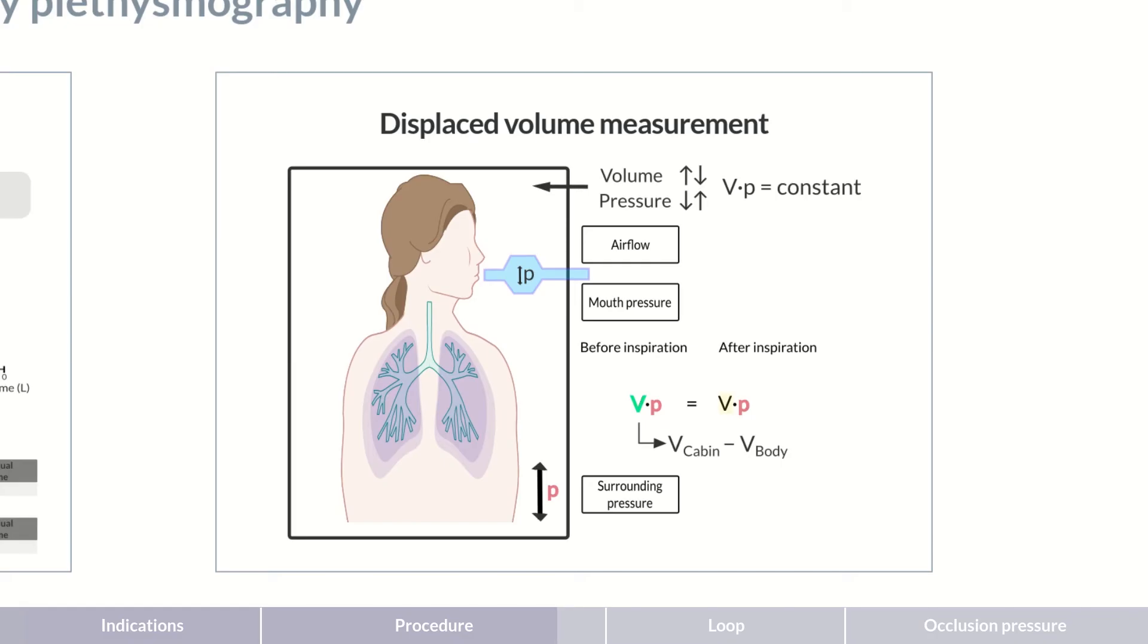The only unknown value is the volume after inhalation, which can now be calculated. The change in volume of the surrounding air, therefore, corresponds to the change in volume of the thorax. It's termed displaced volume.